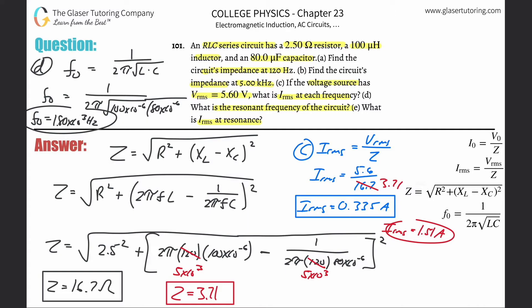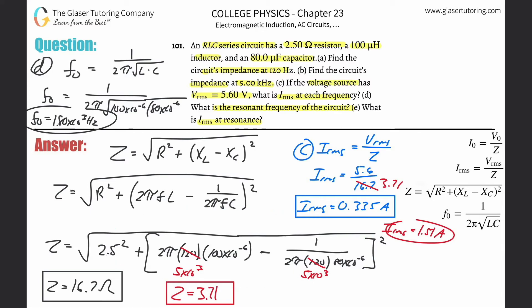Letter E: what is the RMS current at the resonant frequency? We do the whole impedance calculation again. We substitute the frequency as 1.80 times 10 to the third in both places — for the inductive reactance and the capacitive reactance terms.